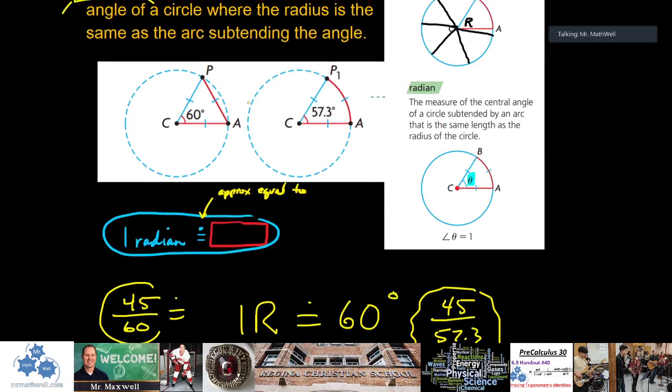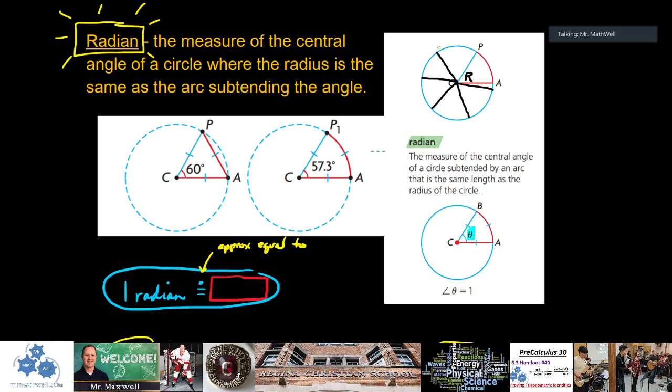The circumference of a circle is 2 times pi times r. Notice how pi is in the form of the circumference. If we had a radius of 1 in a circle, the circumference would then be 2 pi. The circumference, the distance around the circle, is connected to the central angle. So this is where we get 360 degrees and 2 pi sort of being connected. Now the definition of a radian.